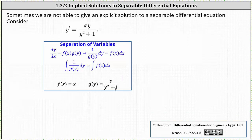Once we know we have a separable differential equation, we need all the y parts on the left and the x parts on the right. To do this, we either divide both sides of the equation by g of y or multiply by one over g of y, and then write the differential equation in differential form. And then finally, we integrate both sides of the equation.